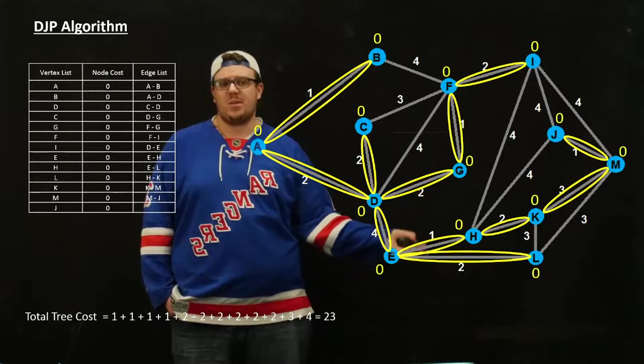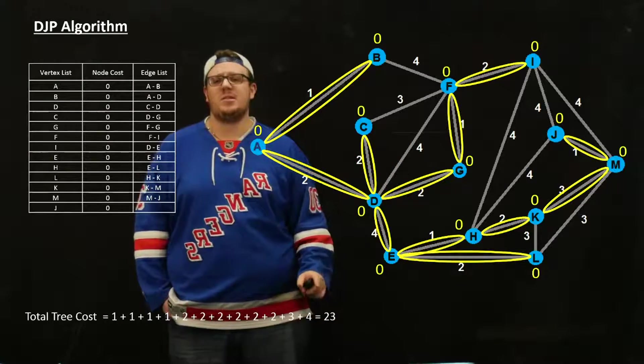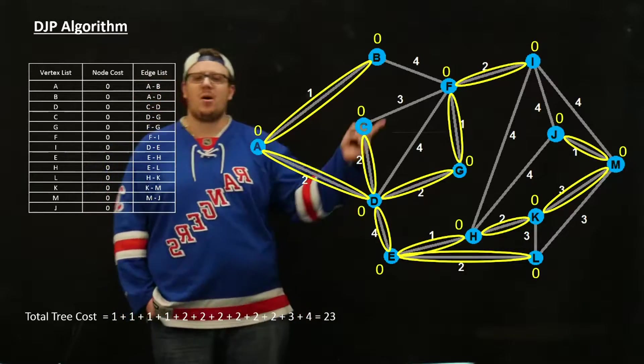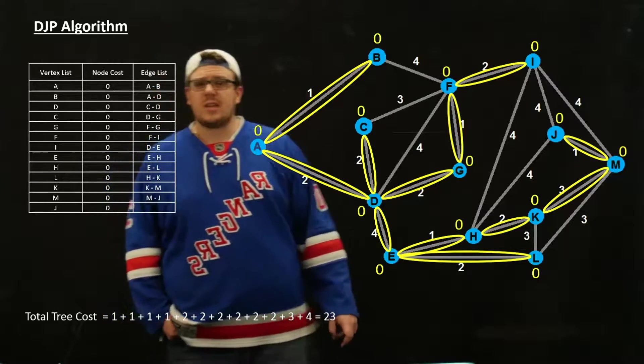It should have ended up with the same minimum spanning tree cost. If you add up all of these edge weights, you should end up with 23. So that's Dijkstra-Jarnik-Prim.